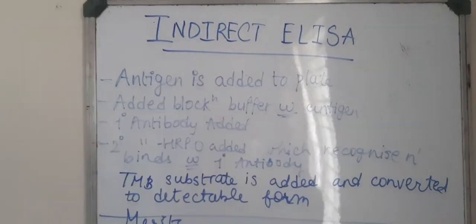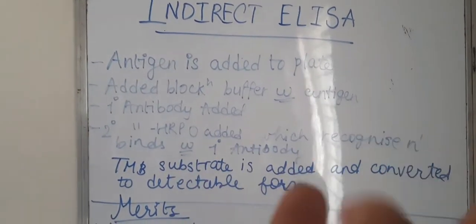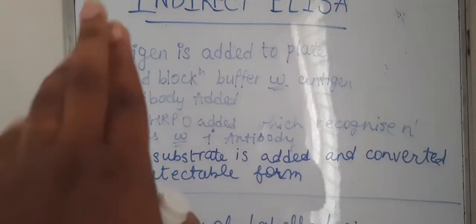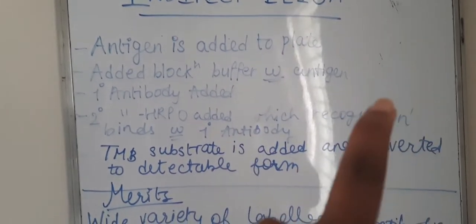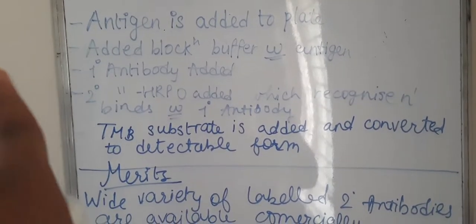So first of all, an antigen will be added to the plate. Next, there will be a buffer solution with the antigen which will be added to it.